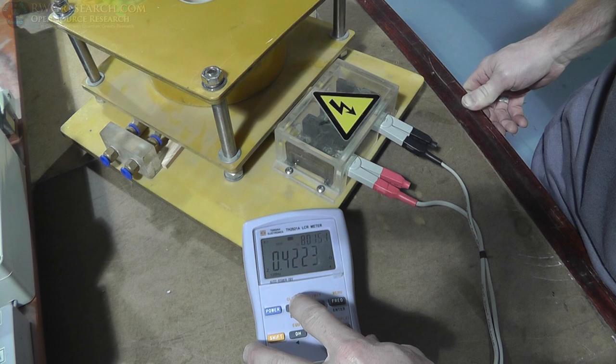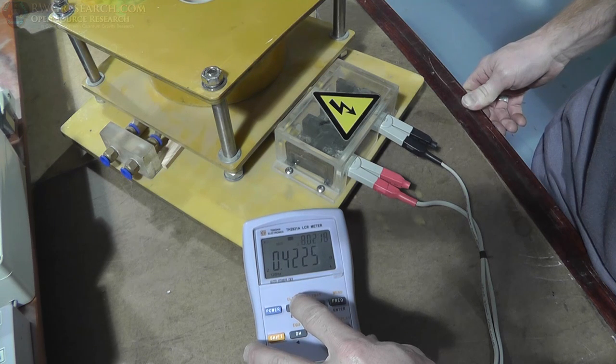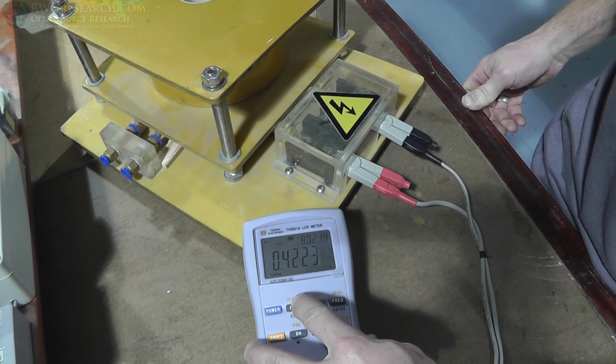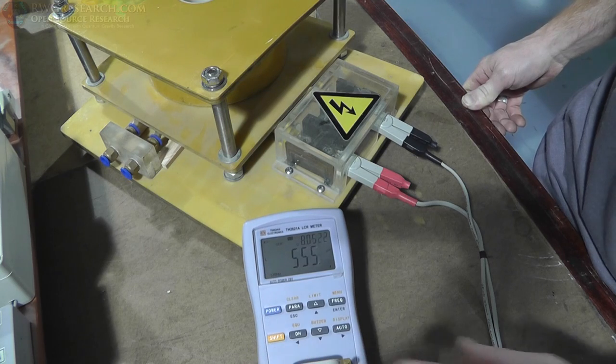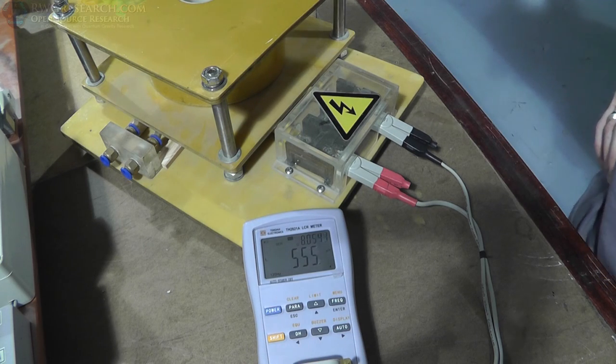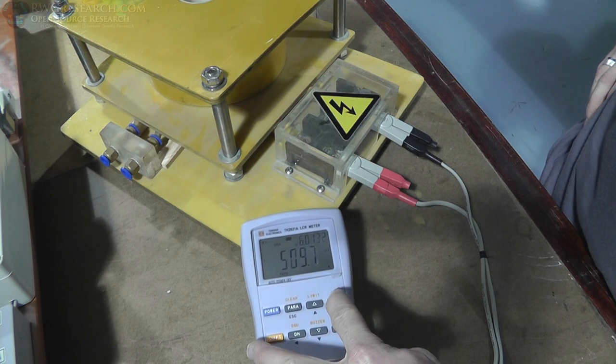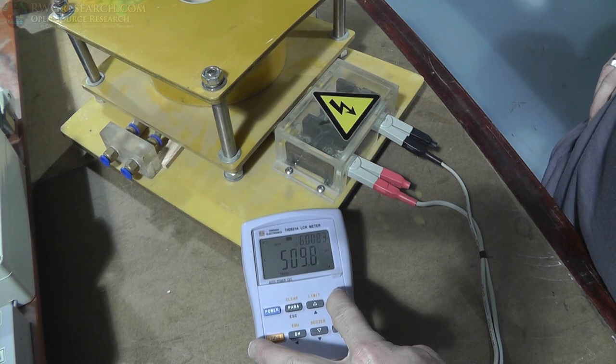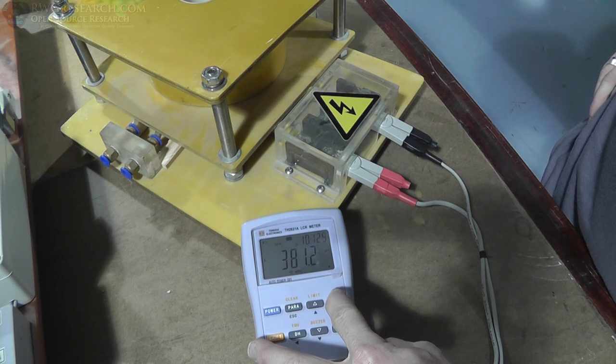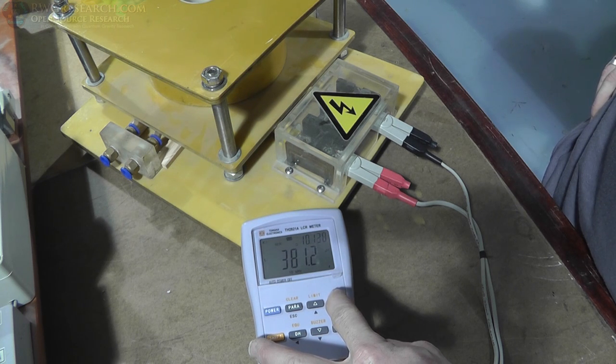The impedance is about 0.4224 of an ohm at 120 hertz. And the inductance is about 555 micro henry. So we can change the frequency. There's 10 kilohertz, 381 micro henry.